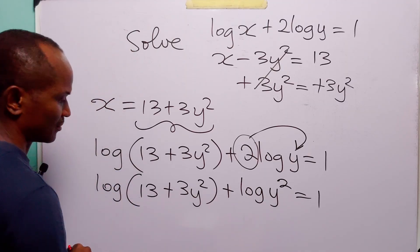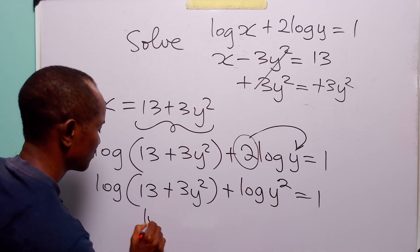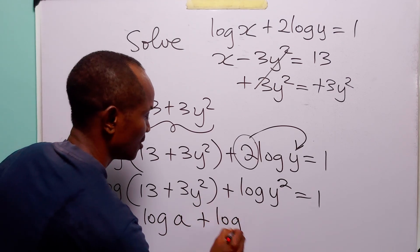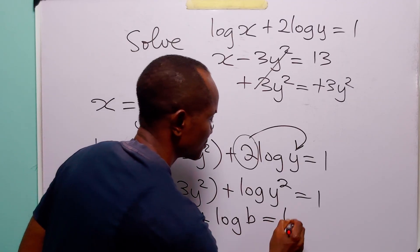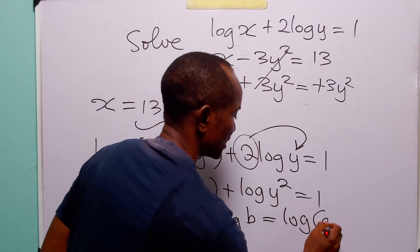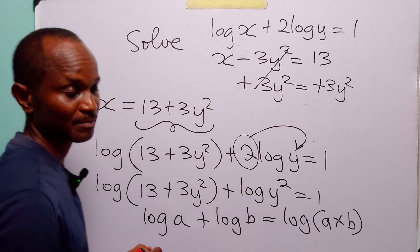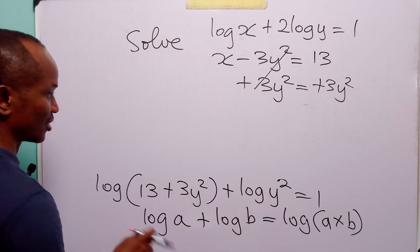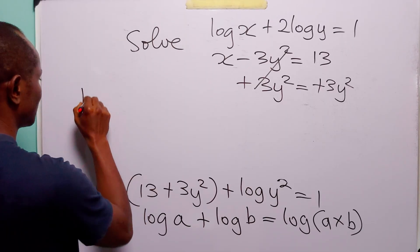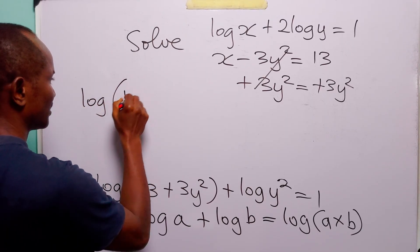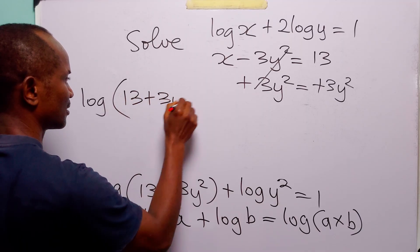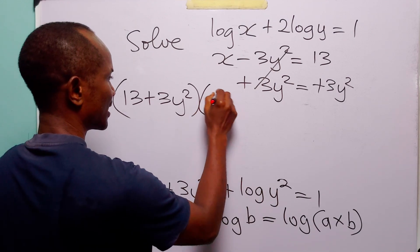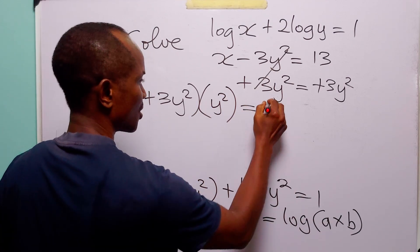Now, when you look at this equation, remember that log A plus log B is equal to log(A times B). So when we apply this to the left-hand side of this equation, we have log[(13 plus 3y squared) multiplied by y squared] is equal to 1.